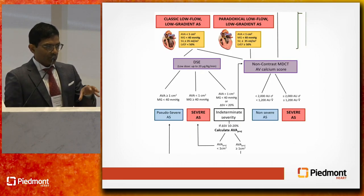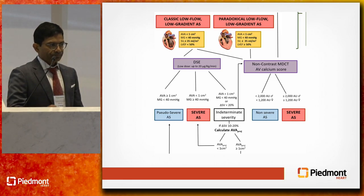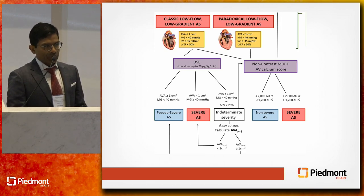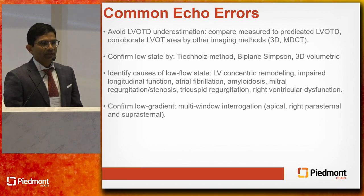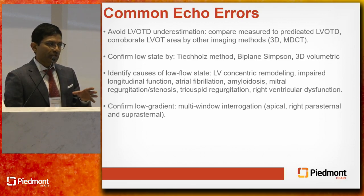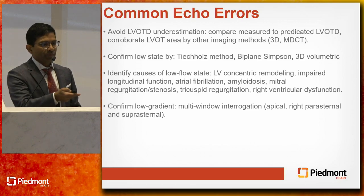With the dobutamine echo, we can identify pseudo-severe aortic stenosis, true severe AS, and an intermediate category. For the calcium score, more than 2,000 Agatston units in a male is considered severe; more than 1,200 for a female. Common echo errors include underestimating the left ventricular outflow tract diameter. We always want to confirm the low flow state by other methods, look for other causes of low flow, and particularly look for red flags for amyloid — many of these low flow, low gradient patients are actually amyloid patients and will not benefit from TAVR.